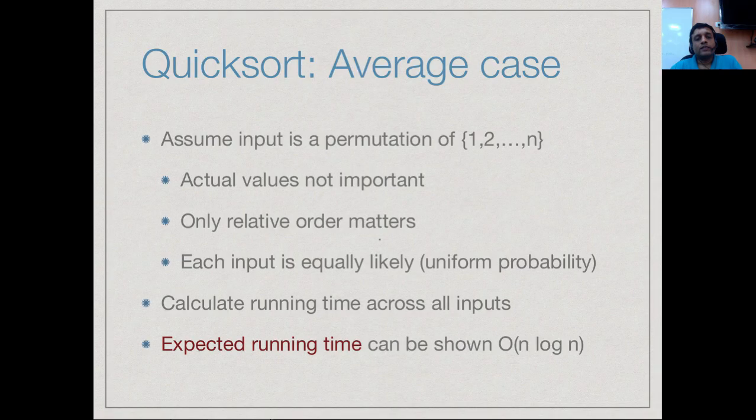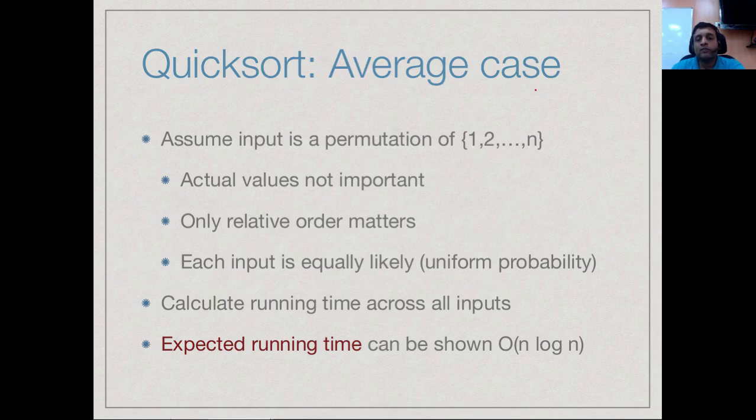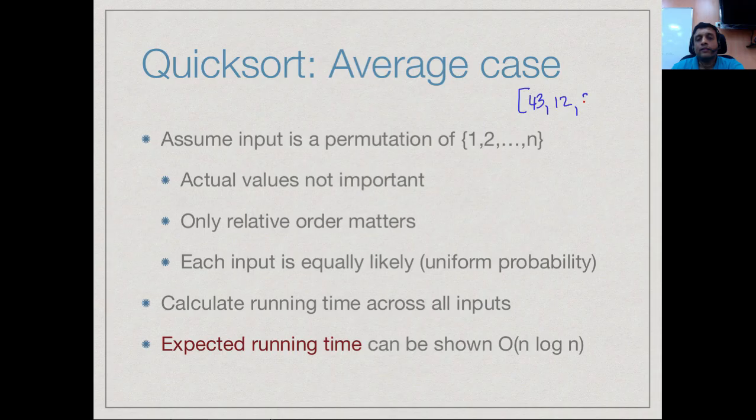The first reason why the average case is difficult to compute is because we need to have a way of describing all possible inputs. Even for a sorting algorithm, all possible inputs is an infinite space. Suppose I just take arrays of a fixed length, say arrays of length 4. I could have an array which looks like 43, 12, 38, and 62. I could have another array of 4 elements which is 72, 21, 63, and 95.